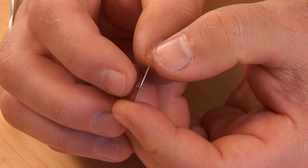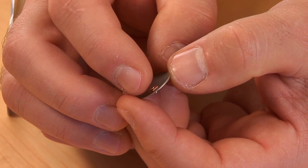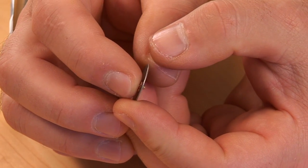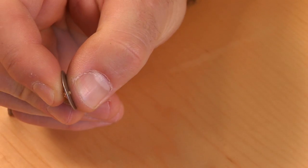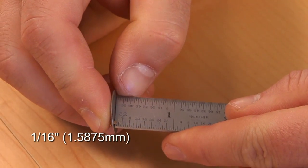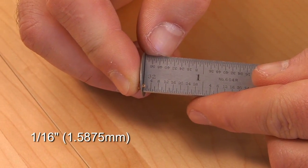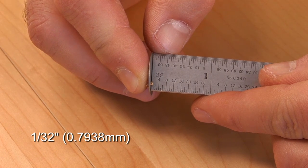How do you determine the length of the rivet you'll need? Just figure out the total thickness of the parts you're going through. Half the diameter of the rivet should protrude. In this case, we're using a 1/16th rivet, so we want it to protrude 1/32nd of an inch.